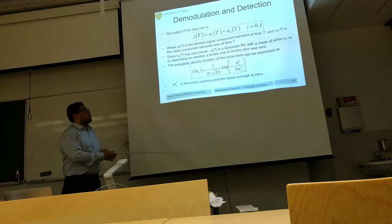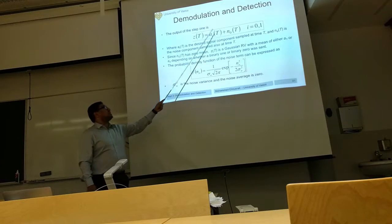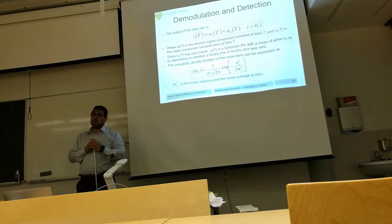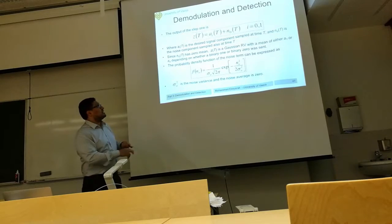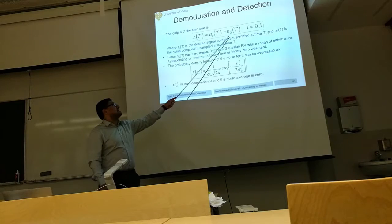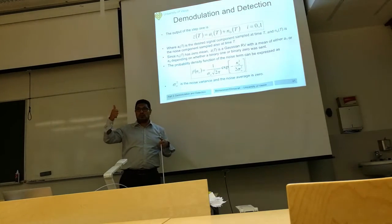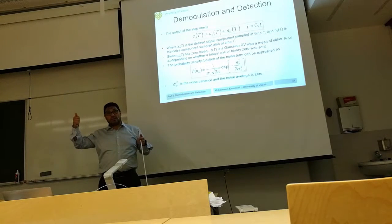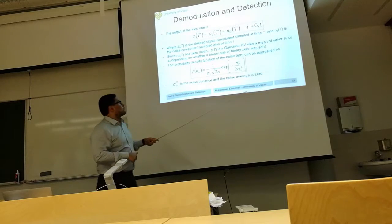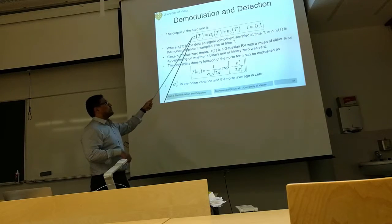Given this noise distribution, what will be the distribution of Z? The additive noise N0 is Gaussian with zero mean, and it is added to a_i(t). The value a_i(t) has only two deterministic values: either a0 or a1. So what will be the distribution of Z(t)?